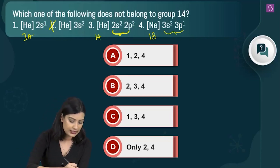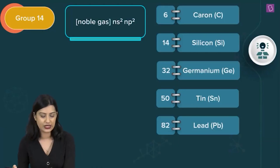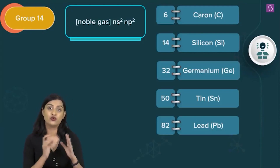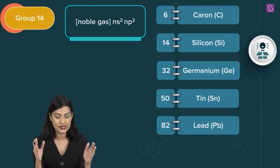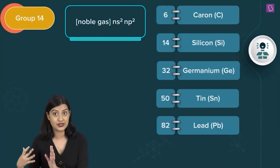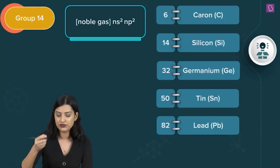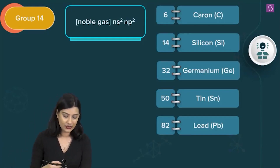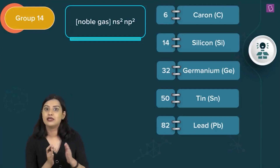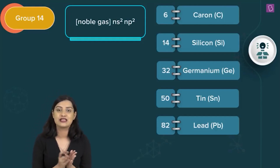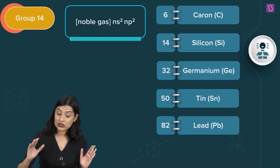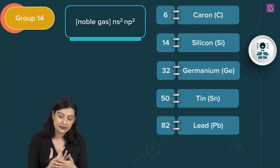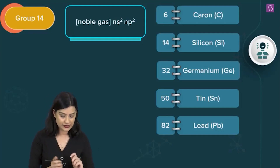Group 14 elements have a noble gas core configuration followed by ns2 np2. The members are carbon, silicon, germanium, tin, and lead. All can show a +4 oxidation state, and as we go down the group, the +2 oxidation state becomes increasingly stable.